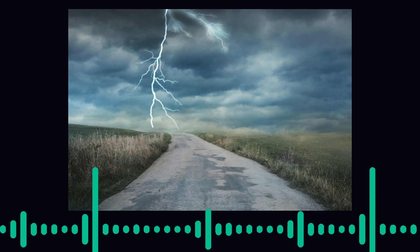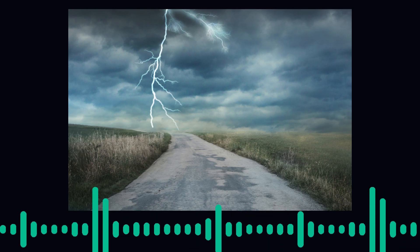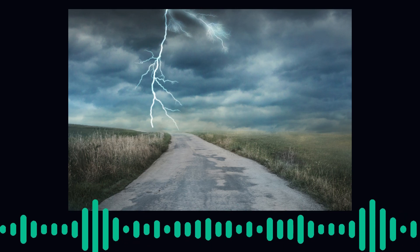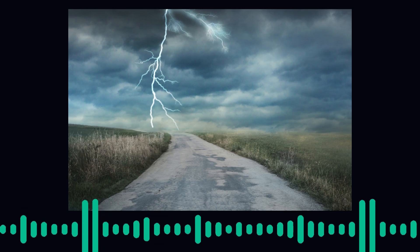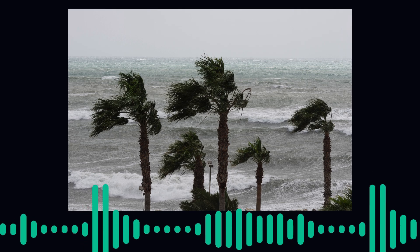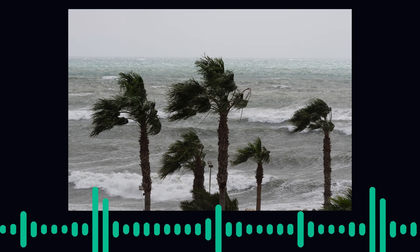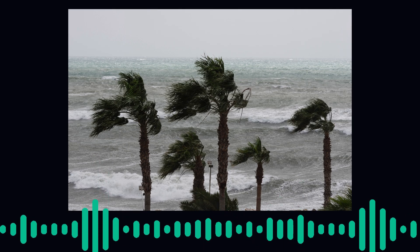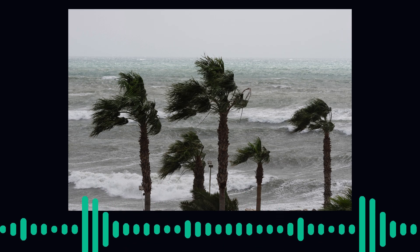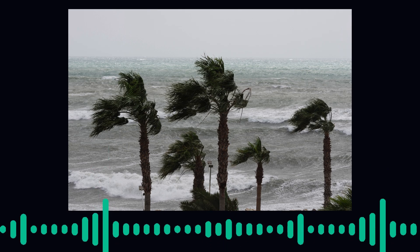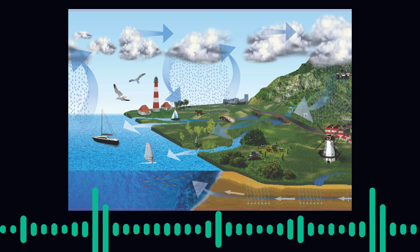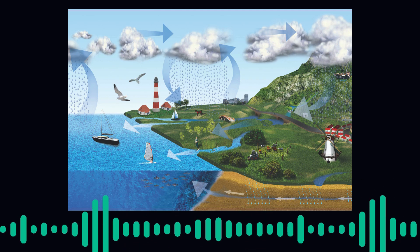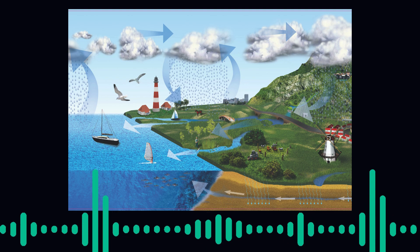Weather radars, such as Doppler radars, are essential for detecting precipitation intensity, wind direction, and storm movement. The data collected from these radars enable meteorologists to issue timely warnings for severe weather events, such as thunderstorms, hurricanes, or tornadoes. This capability is vital for public safety and preparedness. Finally, computer models and forecasting techniques: numerical weather prediction models utilize complex algorithms to simulate atmospheric conditions based on current data and historical trends. These models are instrumental in predicting future weather patterns, aiding in both short-term forecasts and long-range climate projections. Through these advanced techniques, meteorologists can provide more accurate and reliable weather predictions.